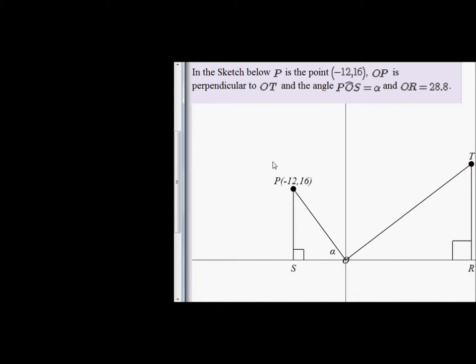So in the sketch below, P is the point (-12, 16) and OP is perpendicular to OT. The angle POS, that angle, is alpha degrees, and OR, that distance, is 28.8 units.